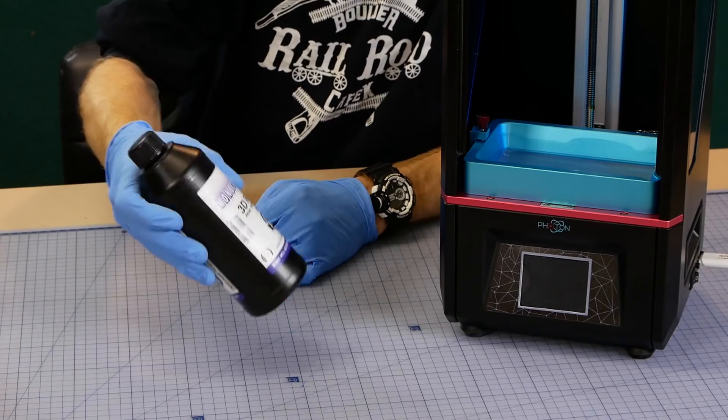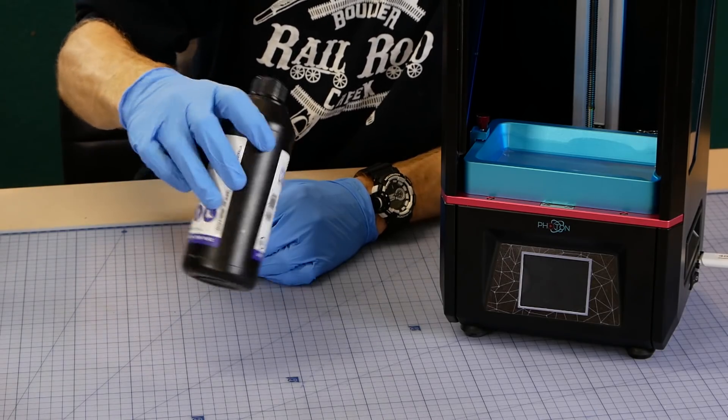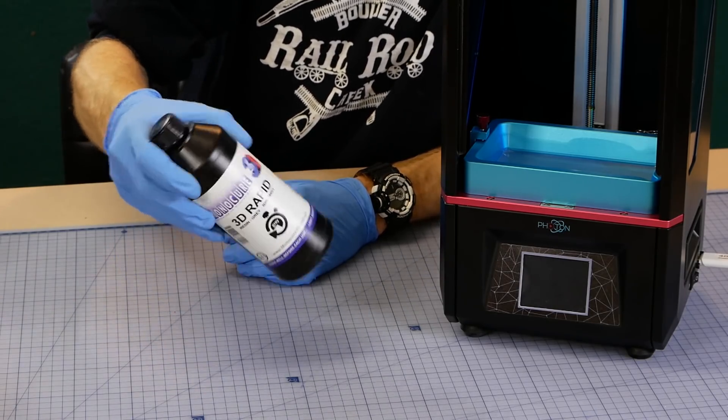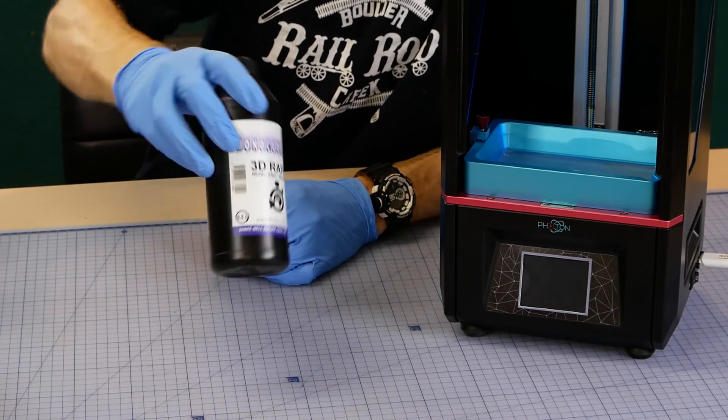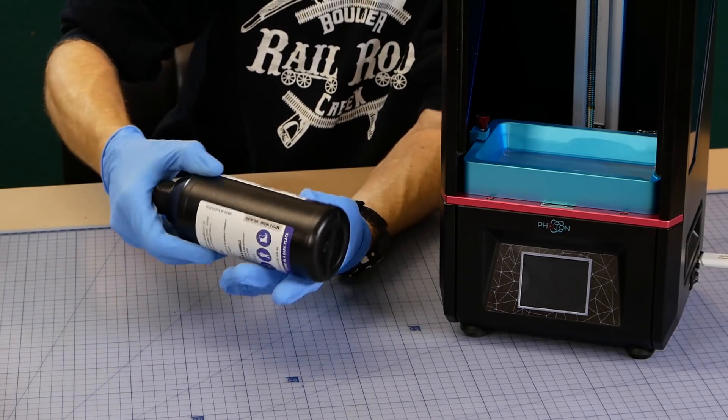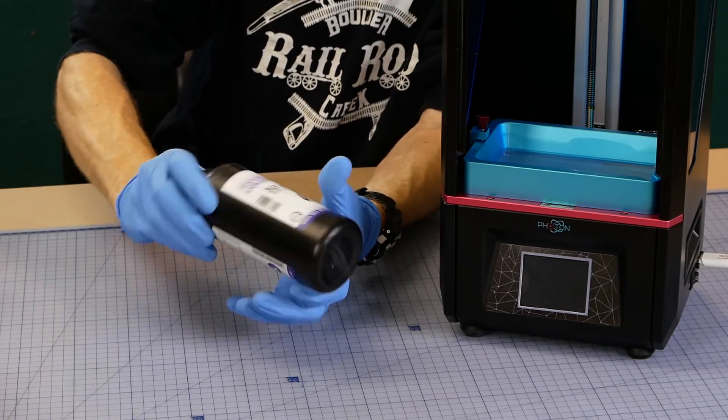The resin needs a good shake prior to use but try to avoid shaking it too vigorously as you will introduce thousands of tiny bubbles into the resin and it could ruin your print. Gently swirling the bottle seems to work well.